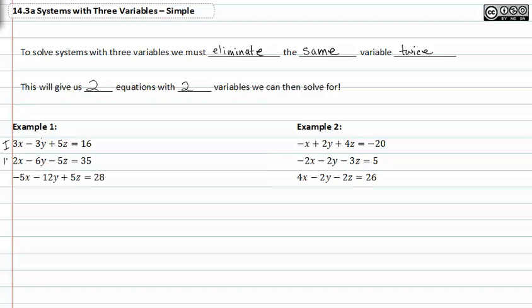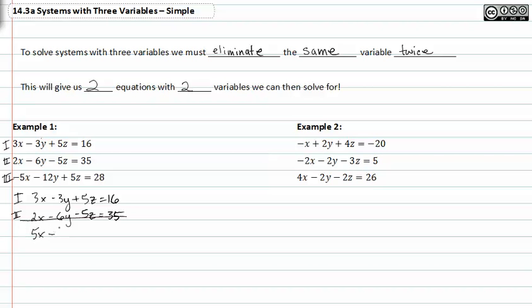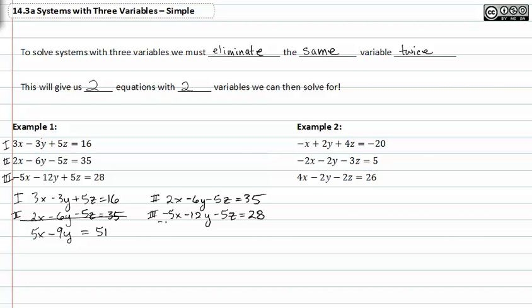In example one, I'm going to label my three equations as one, two, and three. I'm then going to take equations one and two and add them together. This gives me five x minus nine y is equal to fifty-one. I'm then going to take equations two and three and add those together.